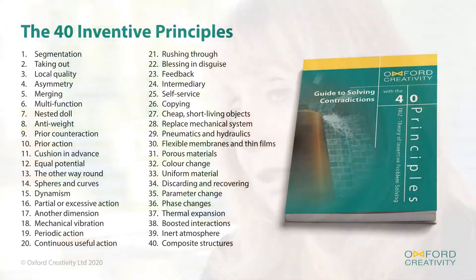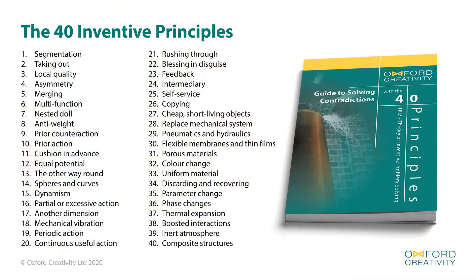All you have to do is strip out the detail and get back to the fundamental concept behind each idea, each patent, and you can see how many answers there are. What they found is that there were just forty fundamental concepts — conceptual ways of solving a contradiction.